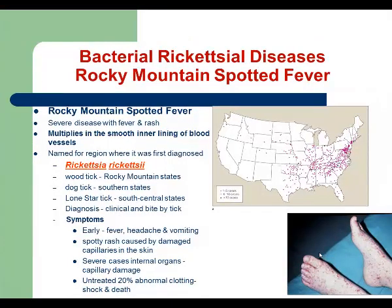We start with the first Rickettsia infection: Rocky Mountain spotted fever. Rocky Mountain spotted fever is caused by a Rickettsia species. Infection is transmitted by ticks, lice, and fleas. The main symptoms will be high fever and rash. Rash is a specific symptom because this pathogen multiplies in the smooth inner lining of blood vessels, causing damage and leakage. Early symptoms include fever, headache, and vomiting — symptoms of intoxication — and then a specific spotty rash appears on the skin. The pathogen also multiplies in the lining of blood vessels of internal organs, leading to capillary damage and internal bleeding.